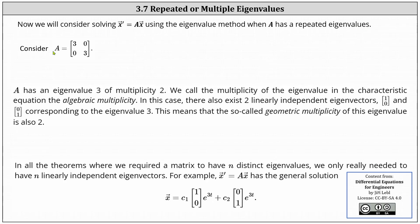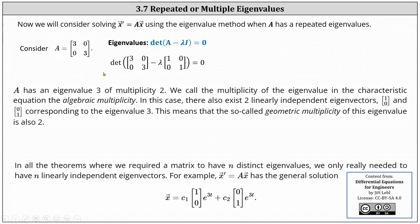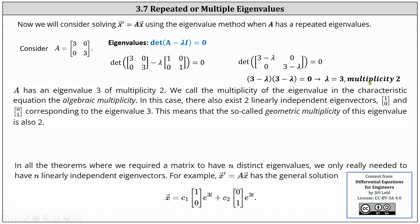Let's begin by considering the matrix A, which is a two-by-two matrix with entries 3, 0, 0, 3. To determine the eigenvalues, we set up the equation — the determinant of the difference of A and lambda I equals zero — and solve for lambda. Simplifying and solving, we get lambda equals three. Notice that the root of three has a multiplicity of two, so we say the eigenvalue is repeated.